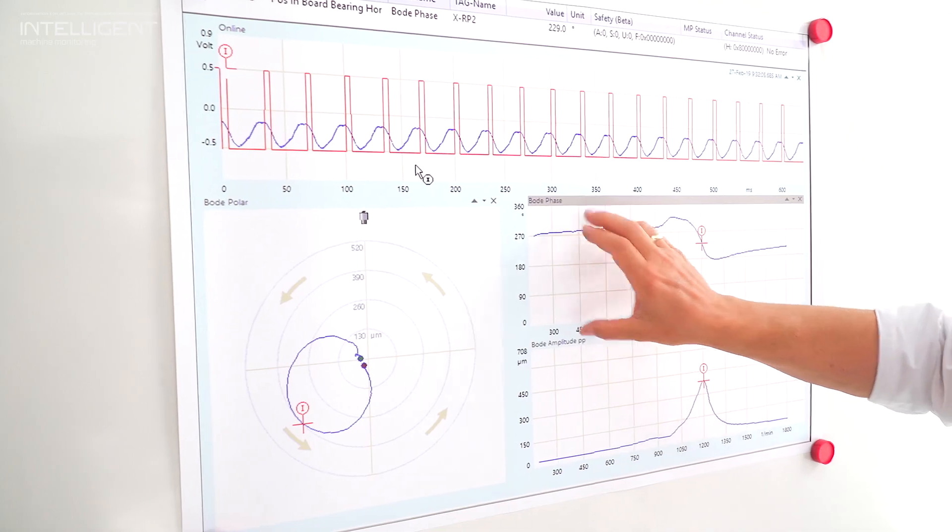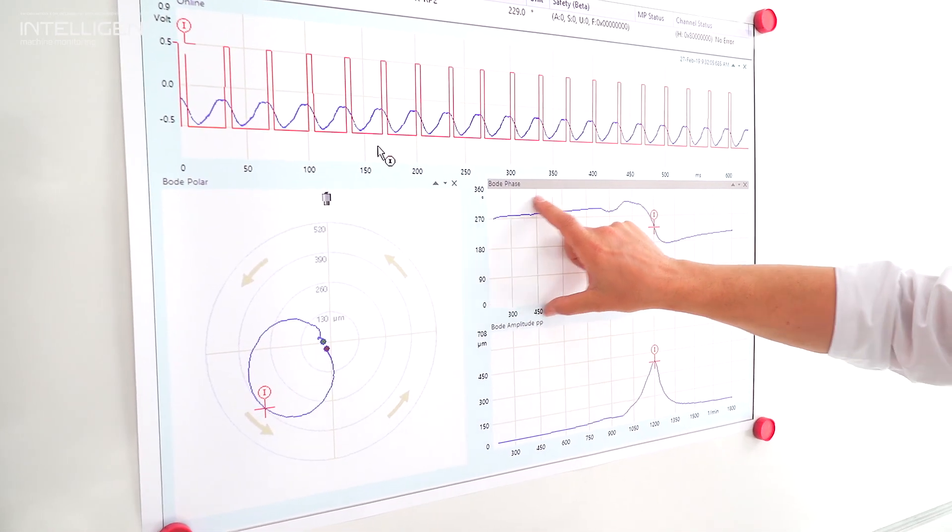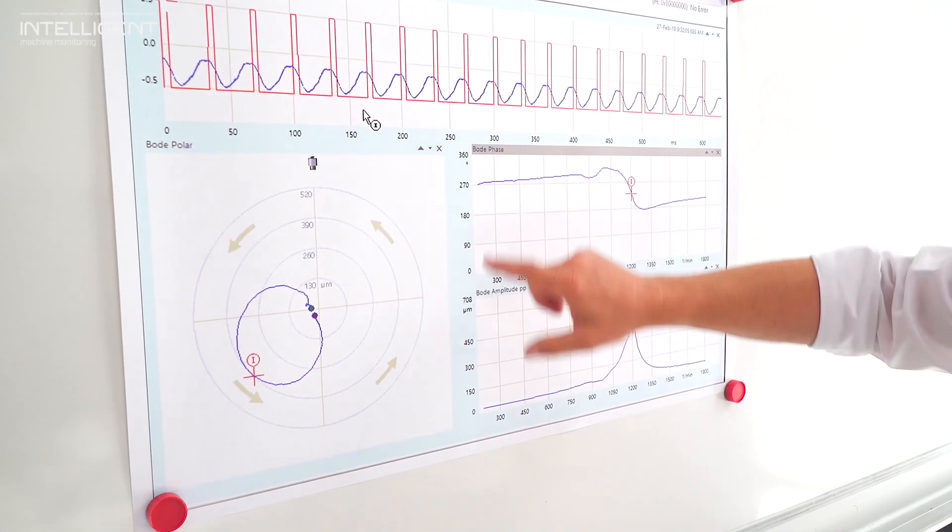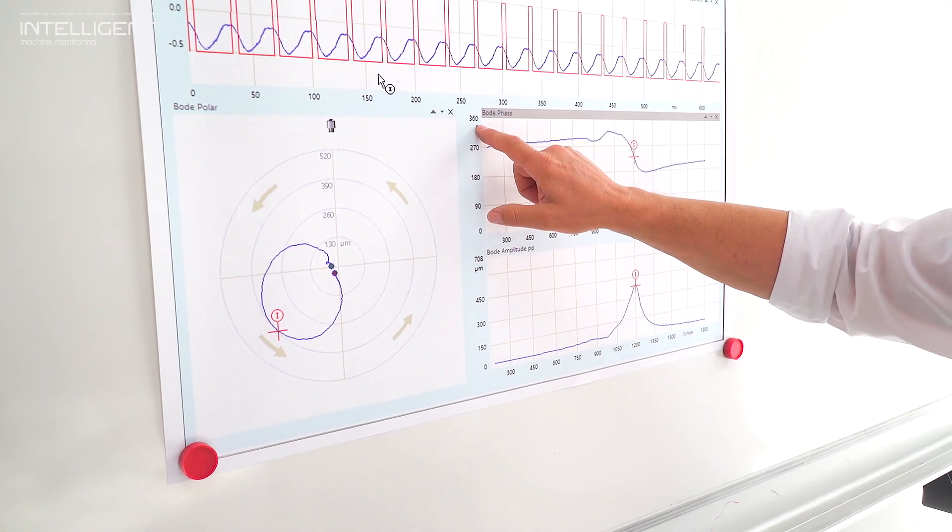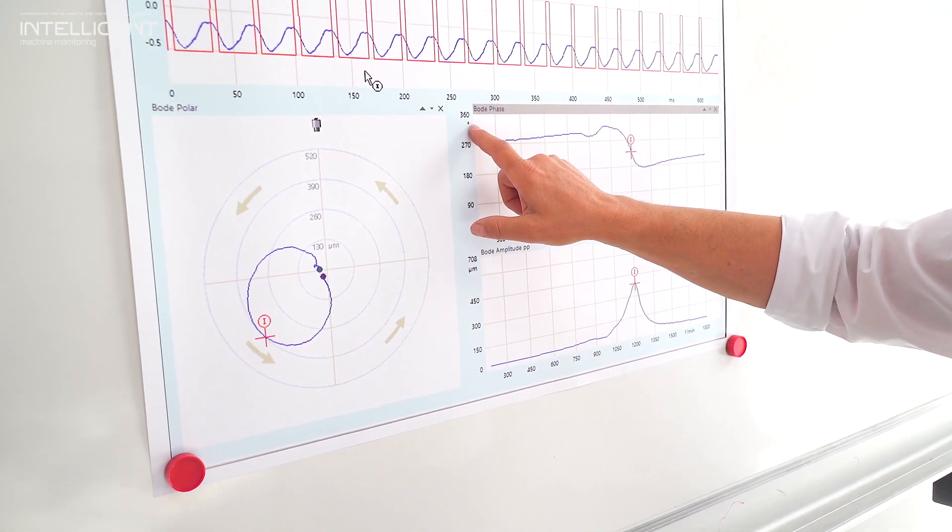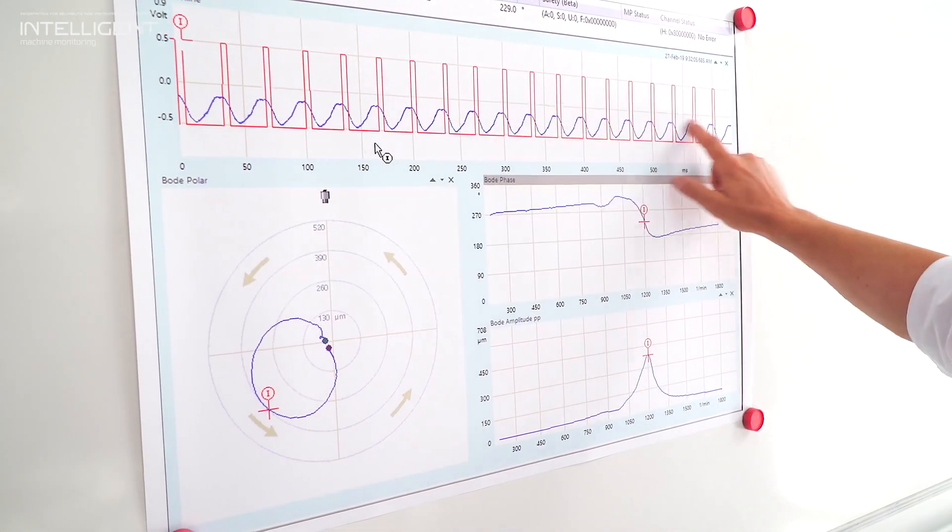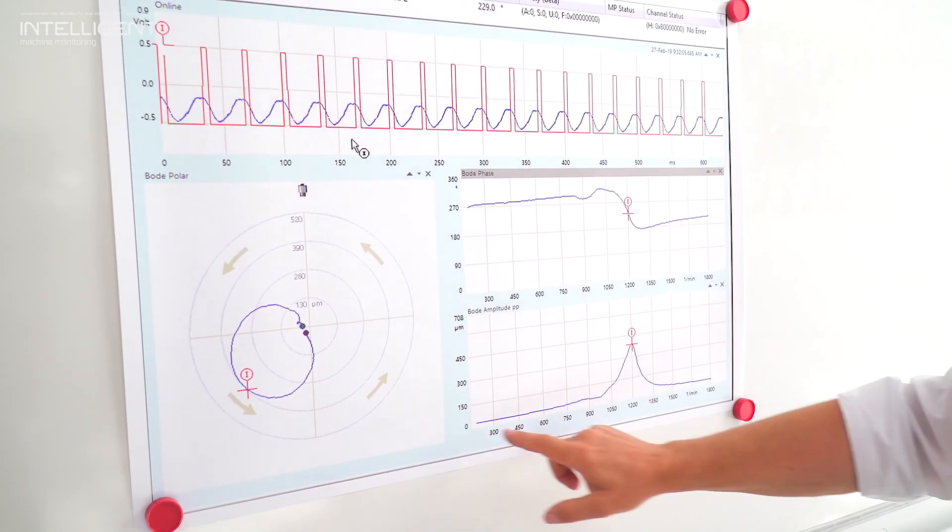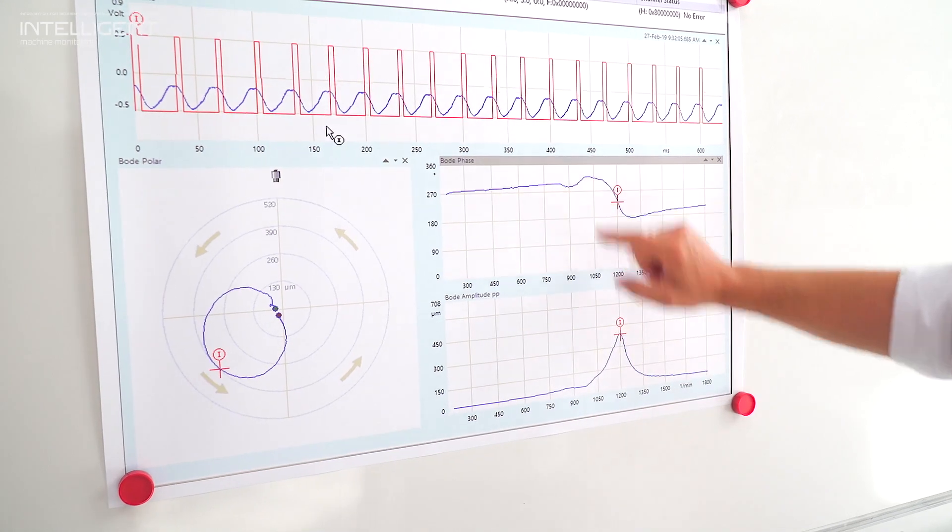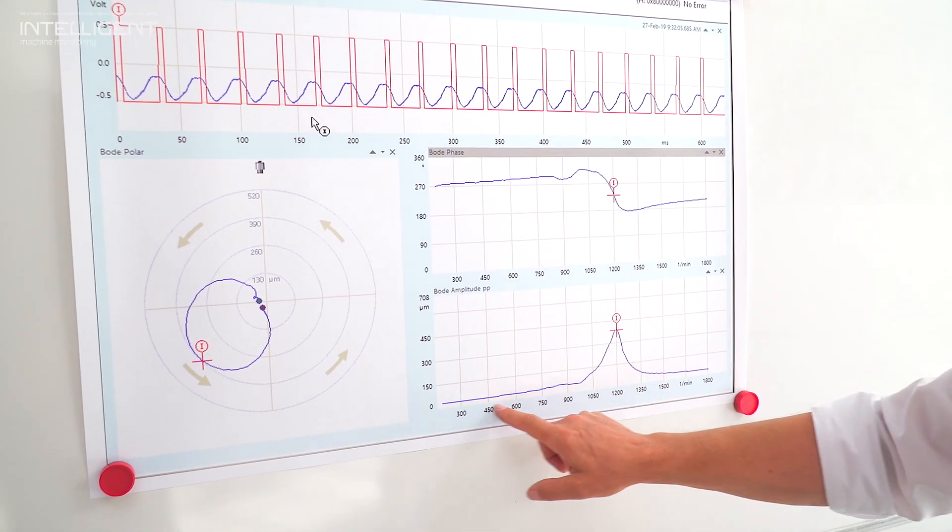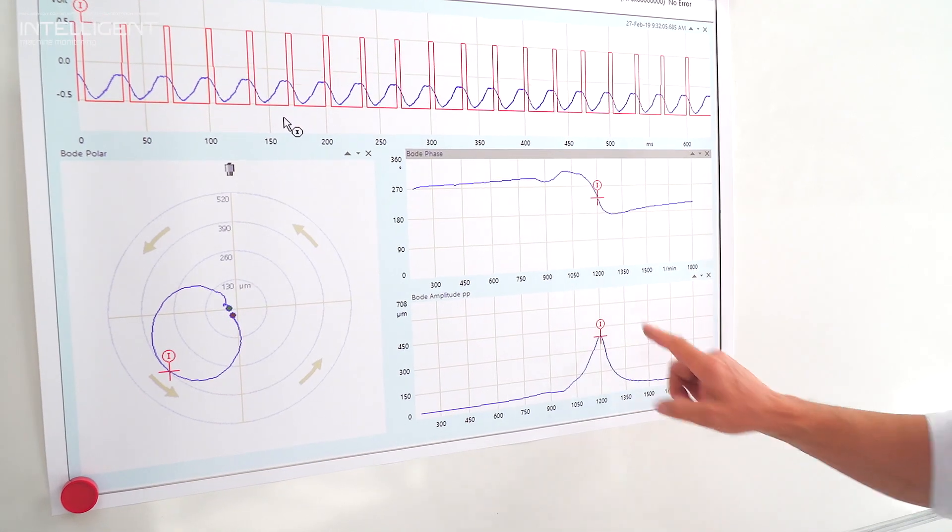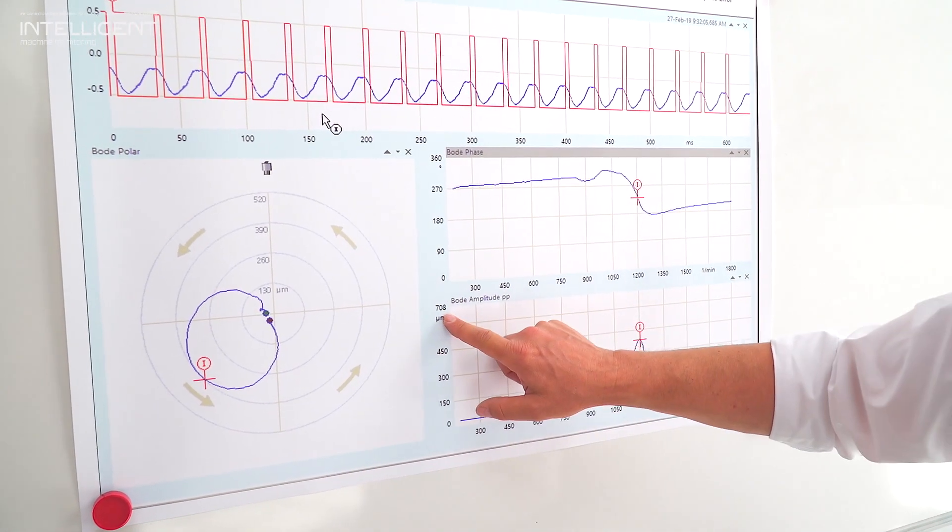What we do here is we show this phase. We have here the phase, that means we are looking here on a 360 degree angle. And this is also the amplitude, the time waveform. So that means here we show the amplitude. These both information are always shown in correlation to the speed, to RPM. And here we have micrometers.